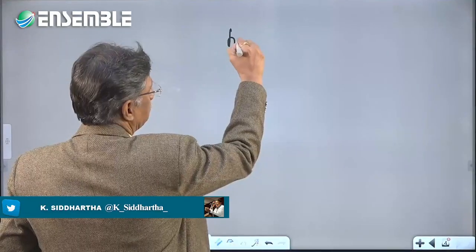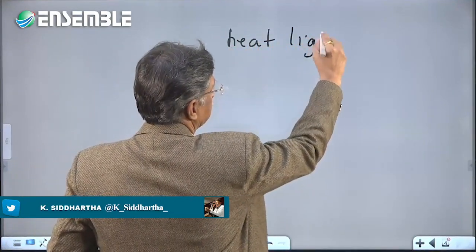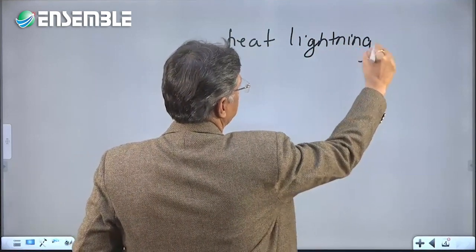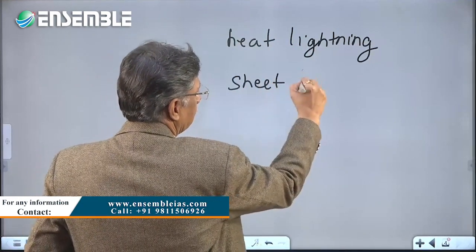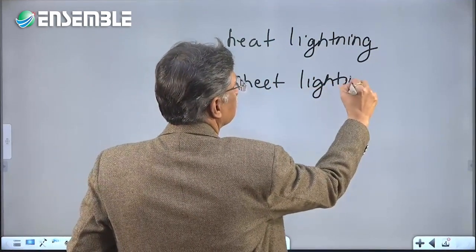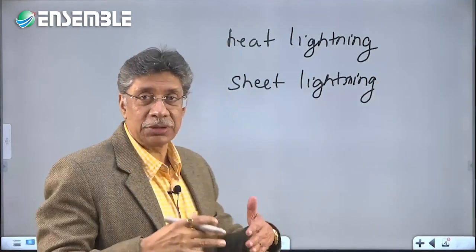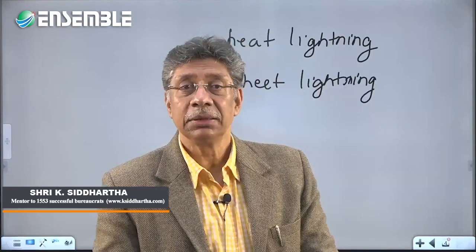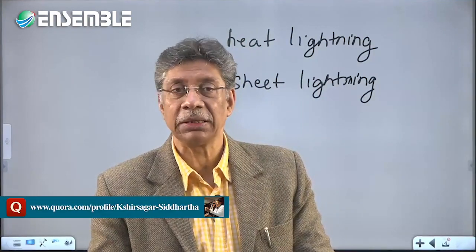When lightning occurs, you see the light first followed by thunder — because of a delay of about three seconds between flash and thunder for every kilometer of distance. When lightning occurs more than 20 kilometers away, thunder is rarely heard, and this type of lightning is called heat lightning.